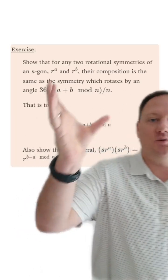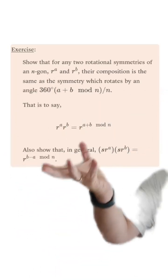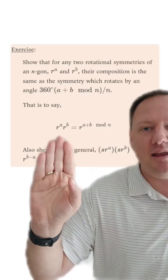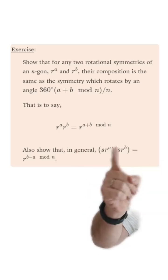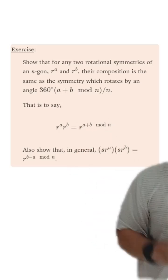Now that we know a bit more about the dihedral group, let's go ahead and do a few exercises to show that if you take any r to the a, r to the b, it's always the same as this formula for the exponent.